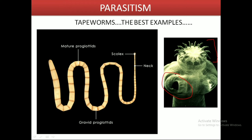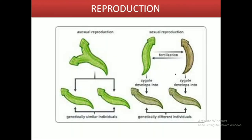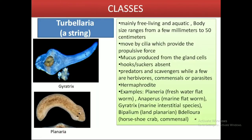Reproduction can occur by both asexual and sexual methods. Asexual reproduction results in genetically similar individuals, whereas sexual reproduction results in the formation of genetically different individuals.